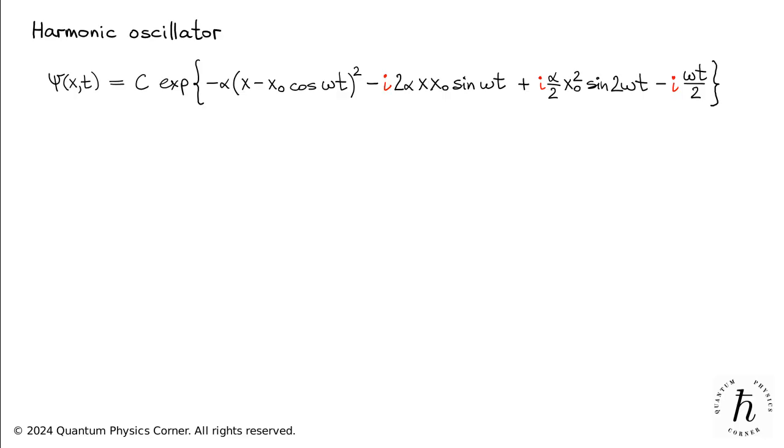Observe now that the first term in the exponent is real, while the other three are purely imaginary. This enables us to rewrite the wave function as the product of the amplitude c, the real exponential, and the complex exponential function.